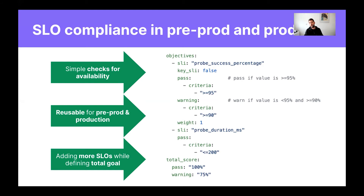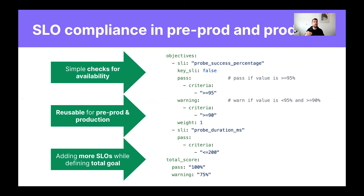If we also want to add more SLOs to this file, it's not a problem. We can just add more, and then the decision that Keptn makes is based on a total score. So we can enforce all of the SLOs or just enforce say 90% of all of our SLOs. Specific SLOs may be marked as key SLOs — based on a service level indicator — and if those key SLOs are not met, Keptn will consider the complete evaluation as failing.